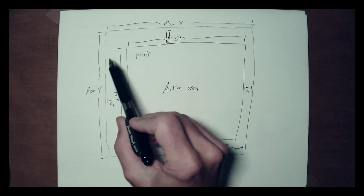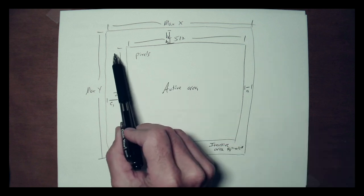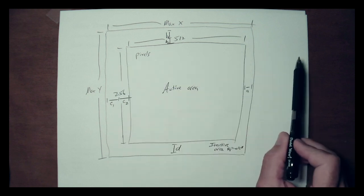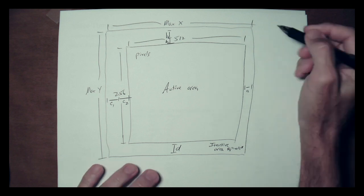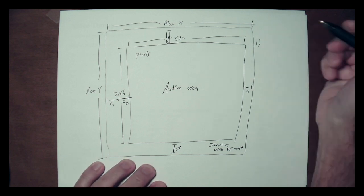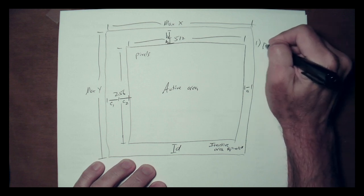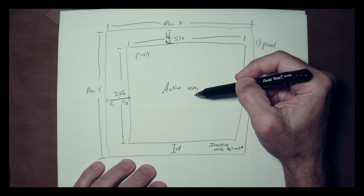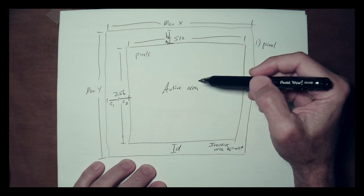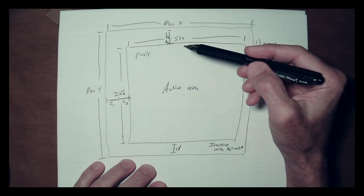Now let's talk about what one horizontal line looks like. There are two main signals involved. First is the pixel signal, which defines the active area — it conveys the state of each pixel. In the RGB standard there are actually three pixel signals: R, G, and B. In our case, since pixels are just on or off, we feed the same single pixel state to all three signals simultaneously.